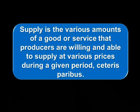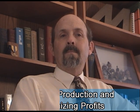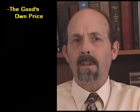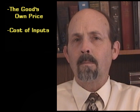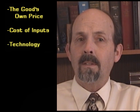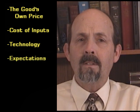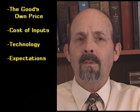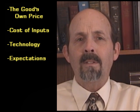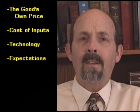Supply is the various amounts of a good or service that producers are willing and able to supply at various prices during a given period, ceteris paribus. Since suppliers produce things to make a profit, the factors that affect the supply curve are related to the cost of production and maximizing profits. The good's own price determines what will be earned by selling it. Cost of inputs to the production process is important because price minus cost equals profits — the higher the input cost, the lower the profits. The efficiency of the technology used to transform inputs into a finished good or service affects the output per unit of input. The role of expectations is the mirror image of their effect on demand: if suppliers see higher prices coming, they have an incentive to offer less now and hold back until prices are higher; if prices are going down, firms would like to offer all they can before prices fall.